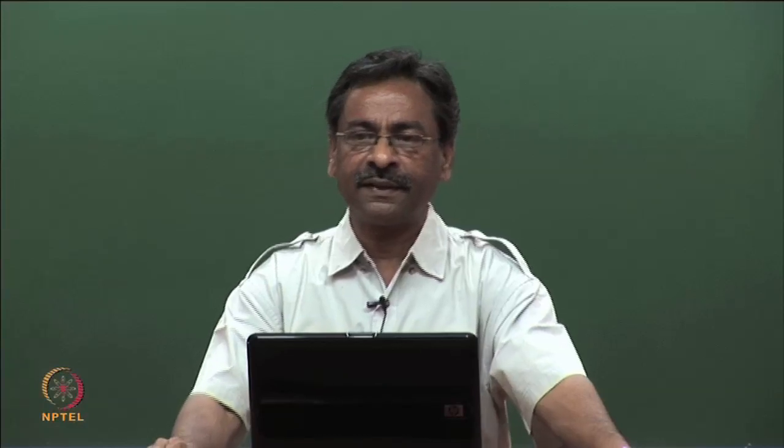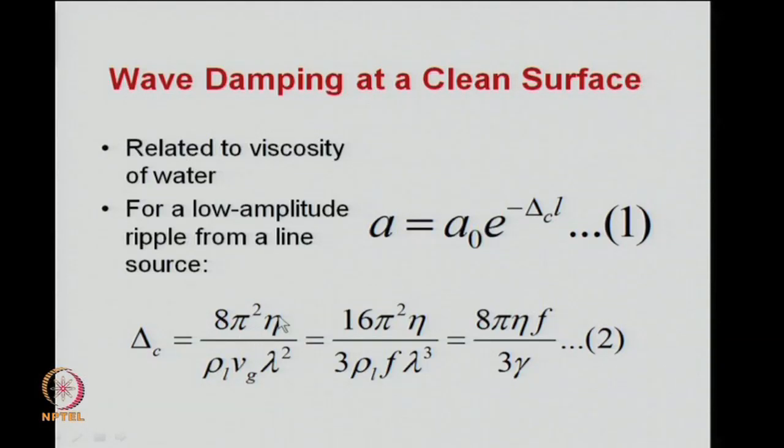Obviously, the best scenario for all contaminated systems, all impure liquid systems would be one wherein a monolayer is visualized and the monolayer could be either insoluble or spread film or it could be soluble or adsorb monolayer. We will discuss that separately, but for the time being we just make note of the structure of this damping coefficient. Damping coefficient is given by 8 pi square eta by rho l v g lambda square which is also equal to 16 pi square eta by 3 rho l f lambda cube and that is equal to 8 pi eta f by 3 gamma.